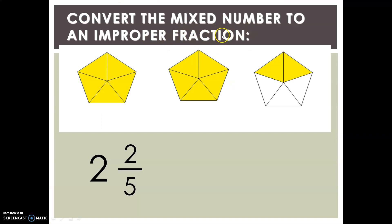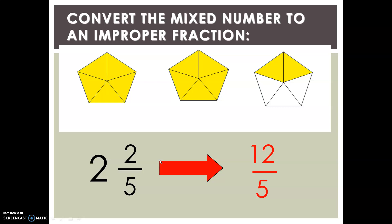Now convert the mixed number to an improper fraction. You can see the figures — a pentagon, a five-sided figure, split equally. The first two whole pentagons are already shaded, so the whole number is 2. The third pentagon has only 2 parts shaded out of 5 pieces, so the fraction is 2 upon 5. Multiply the denominator by the whole number: 5 multiplied by 2 is 10. Add that to the numerator: 10 plus 2 is 12. Keep the denominator as it is — so your answer is 12 upon 5.